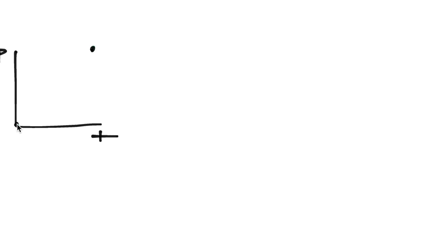So first I'm going to be making a position-time graph. Let's say this is the origin and I want to get over here on my position-time graph. This is a linear graph, so I'm going to be moving at a constant slope. On a position-time graph, since position is meters and time is seconds, the slope is basically going to be meters per second. We also know that meters per second is velocity, so the different points on the graph are going to represent instantaneous velocity.